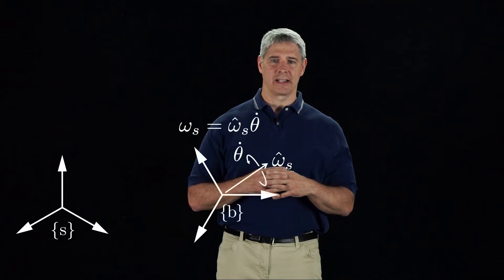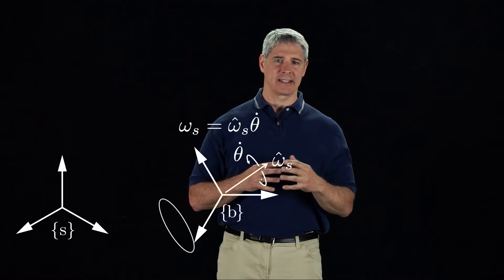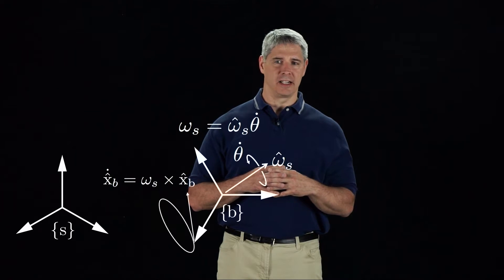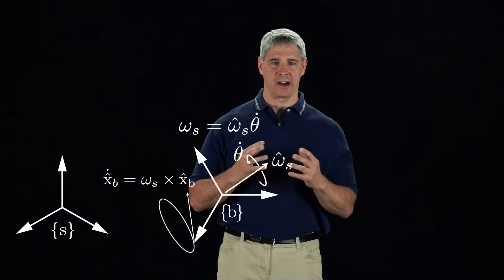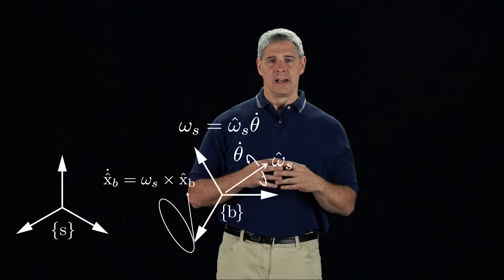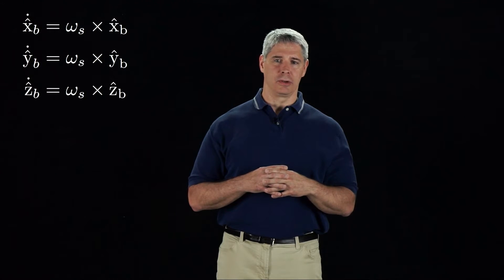As the frame rotates about the axis, the B frame X axis traces out a circle. The linear velocity of the X axis is in a direction tangent to the circle, and is calculated as omega S cross X hat B. A similar relationship holds for the other two coordinate axes.